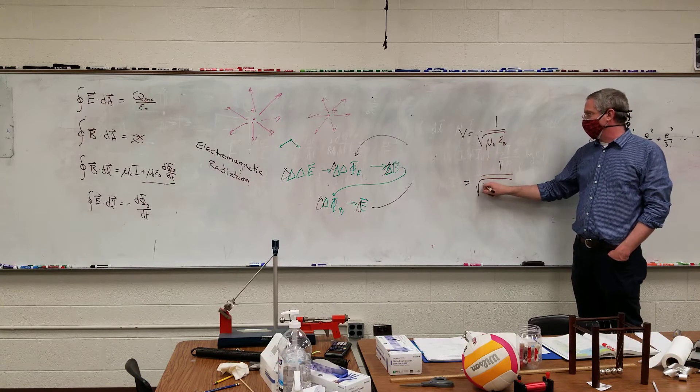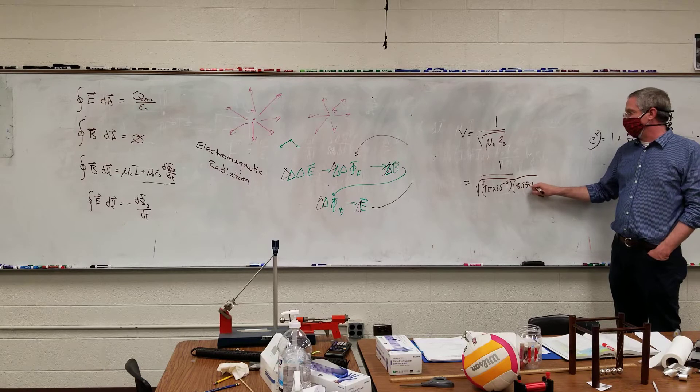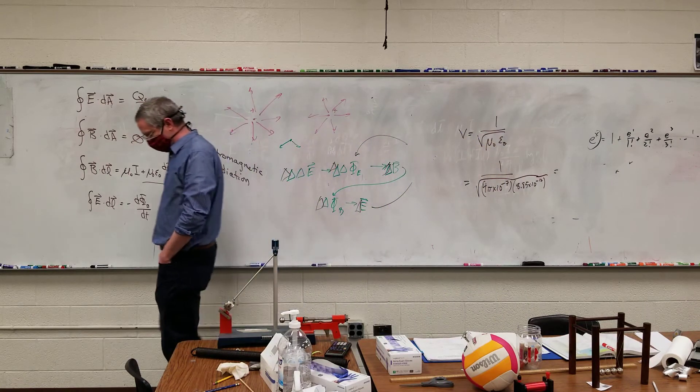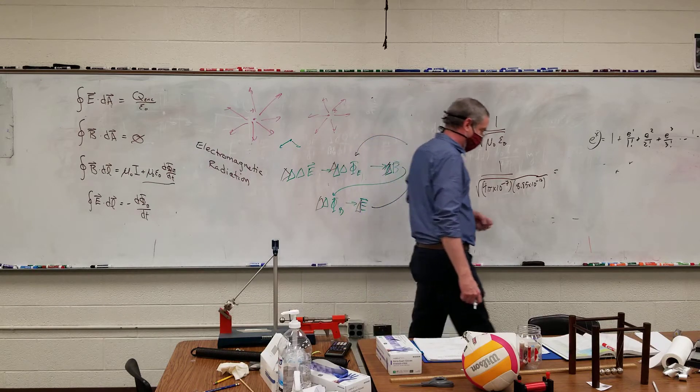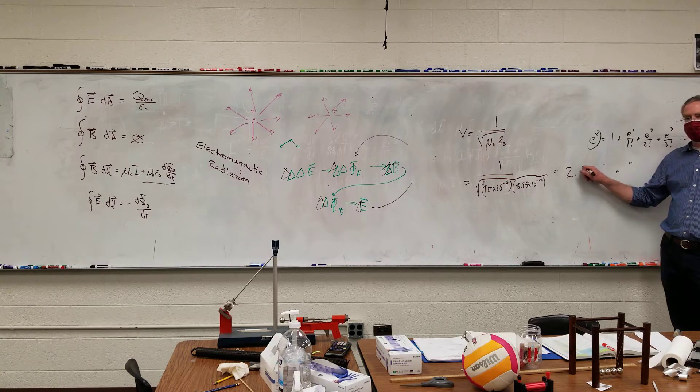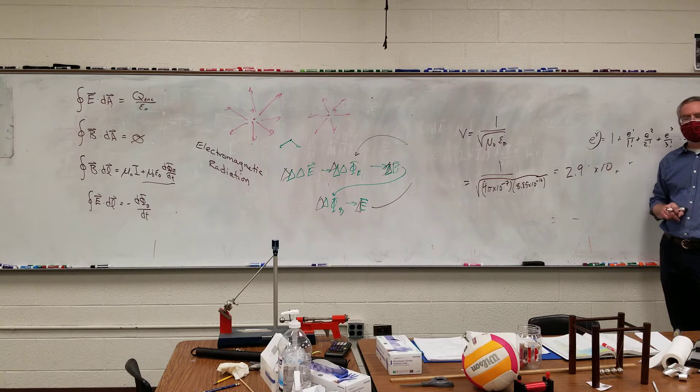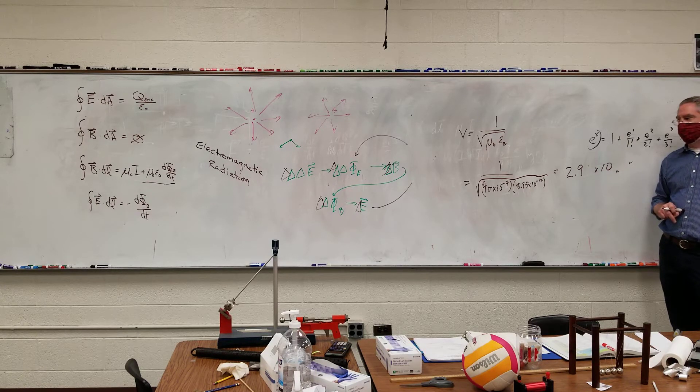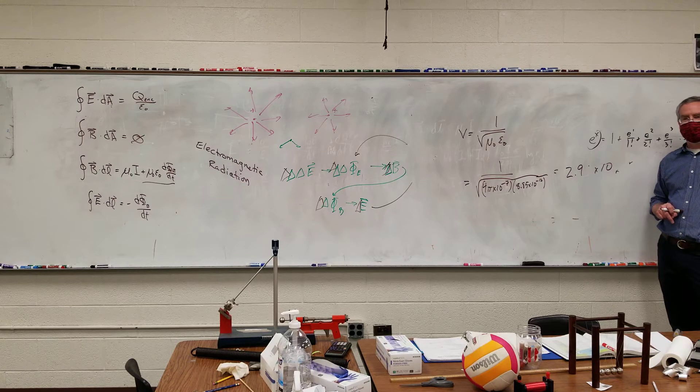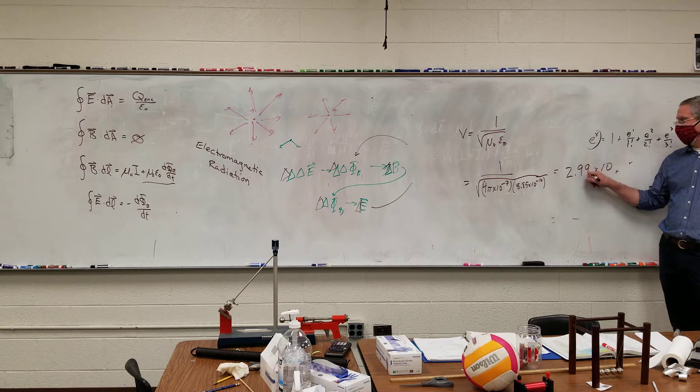So we can actually calculate that, because that's the square root of 4 pi times 10 to the negative 7 times 8.85 times 10 to the negative 12. And if you do that, what do you get? It's 2.99 times 10 to the 8th, I think.